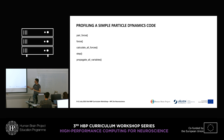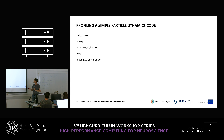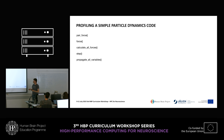The pair_force function defines our interaction. A force function calculates the force on one particle due to all the other particles. calculate_all_forces does this for every particle, and also performs one time step in our simulation: once we've calculated all the forces, we calculate the acceleration, then velocities and finally positions — that's what propagate_all_variables does.